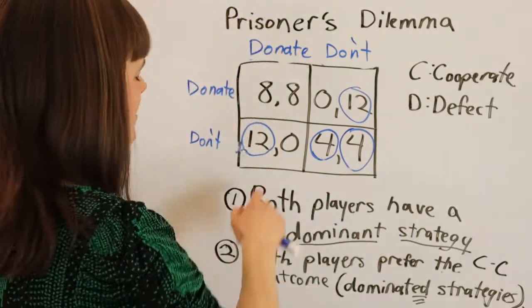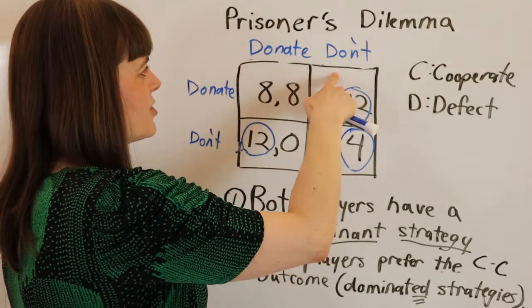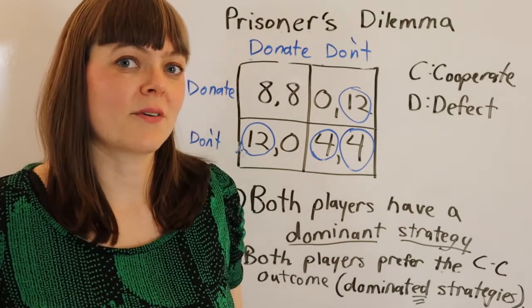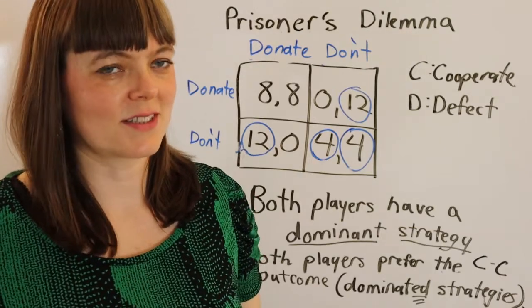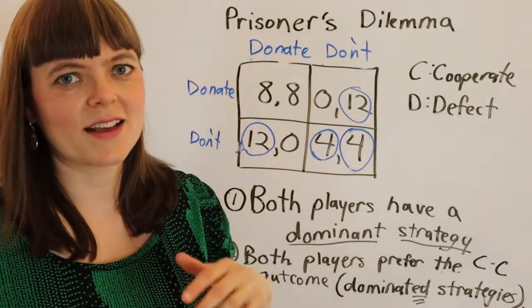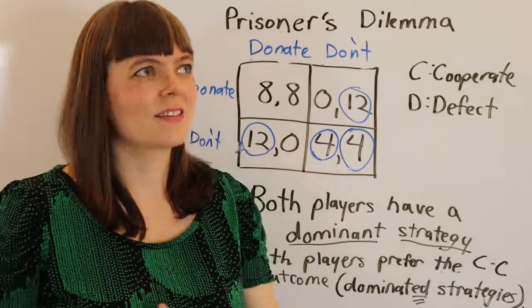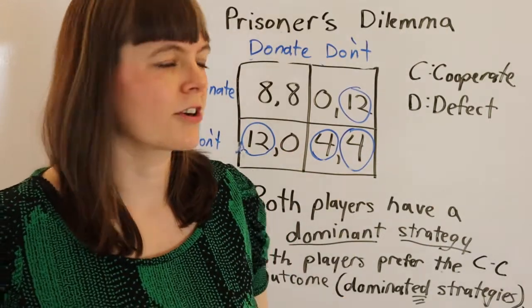Your strategy is either to donate or to not donate, and everybody else in your whole town has those same two options. This matrix only has two players, but of course, lots of prisoner's dilemmas have many players. In this case, if nobody decides to donate, everyone chooses the strategy of don't donate, you don't get that much utility.